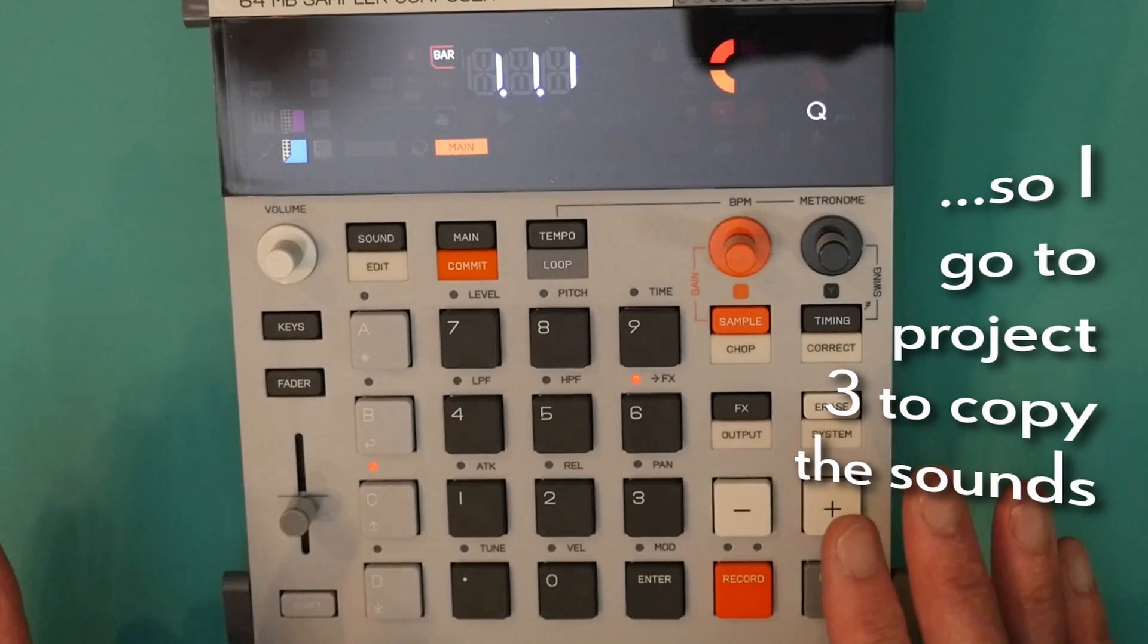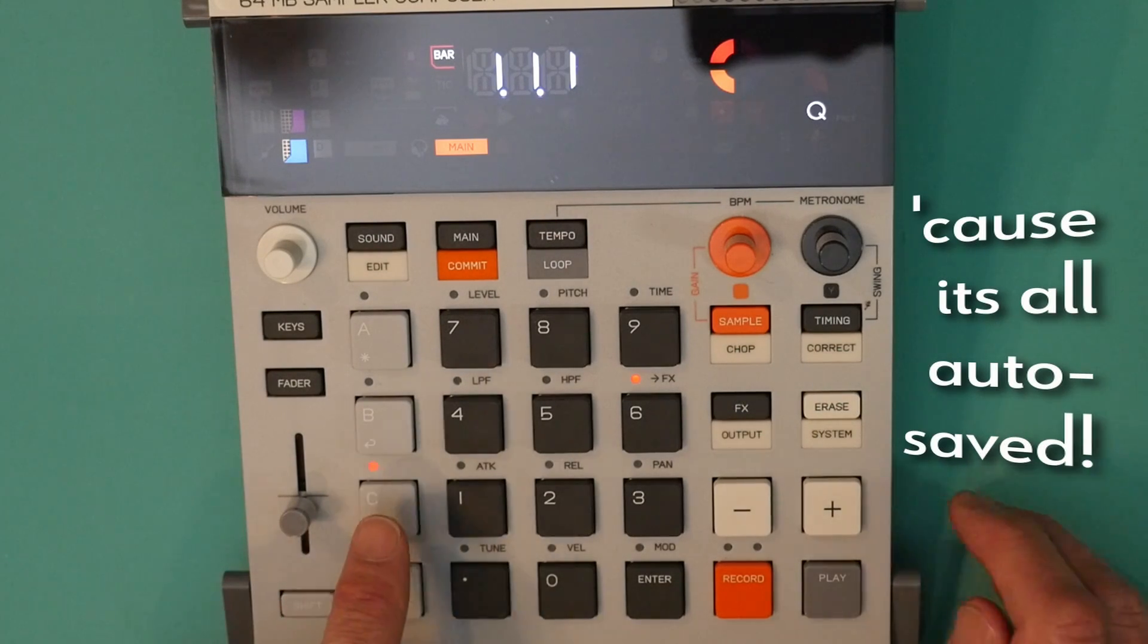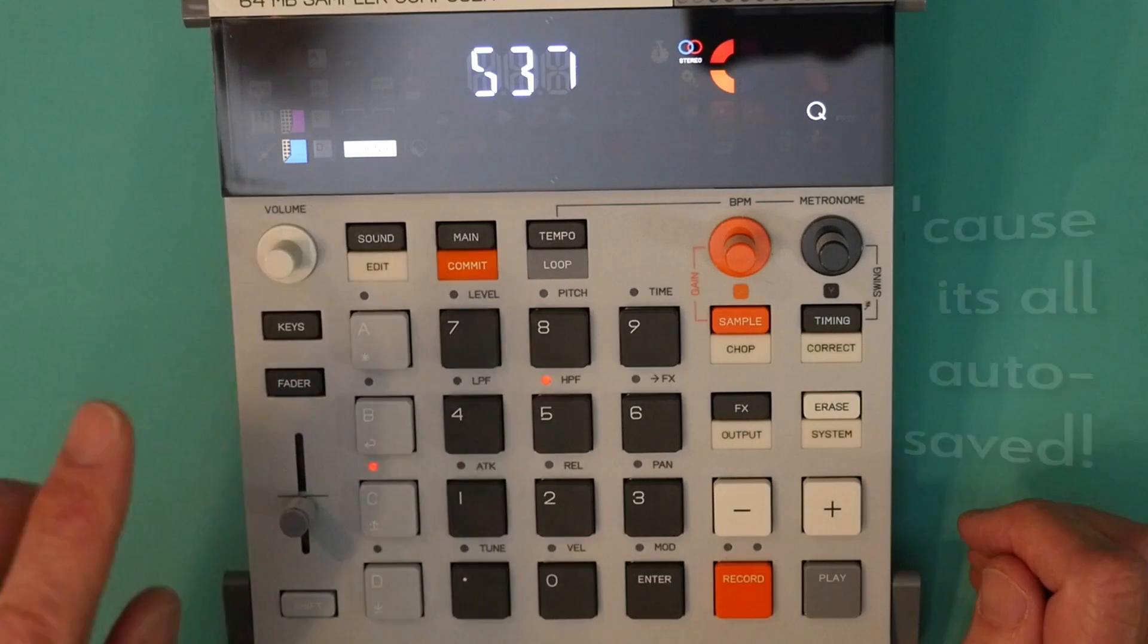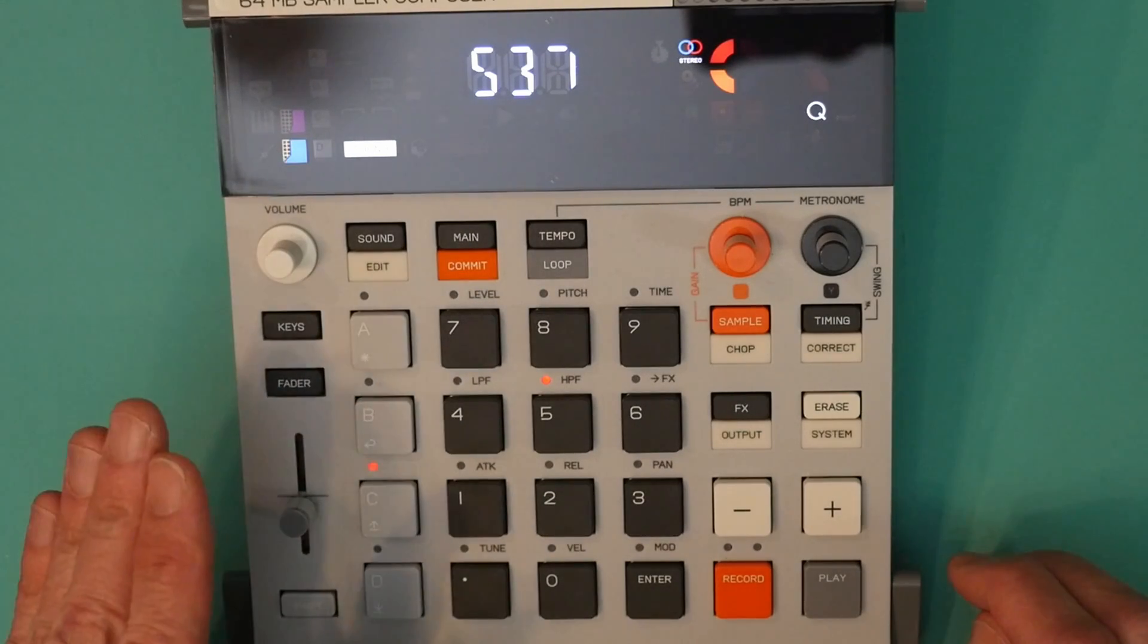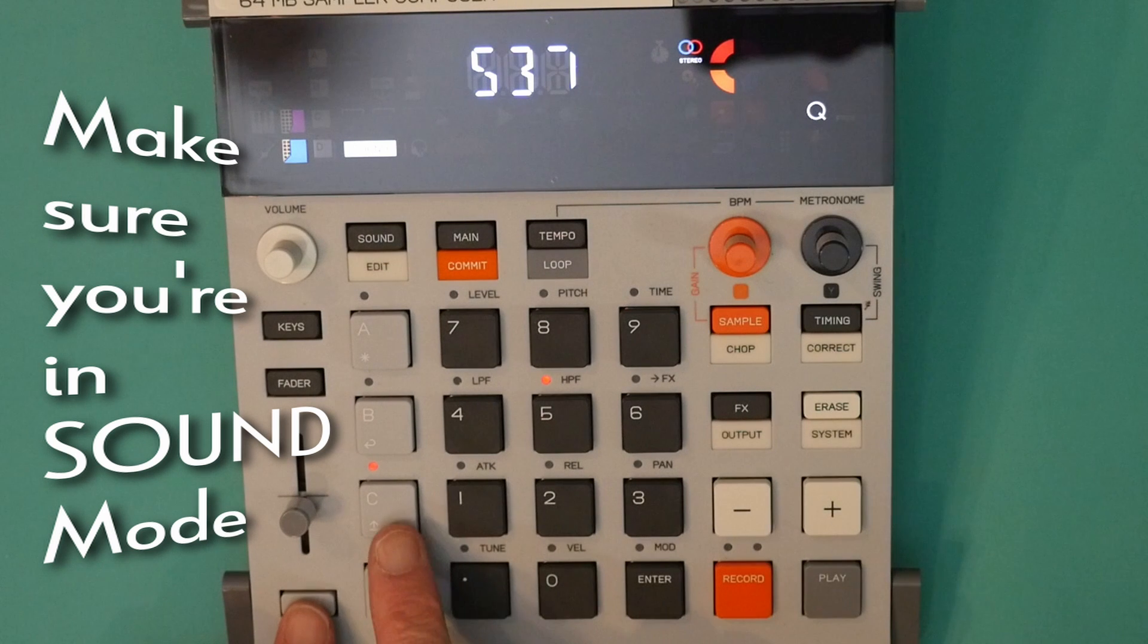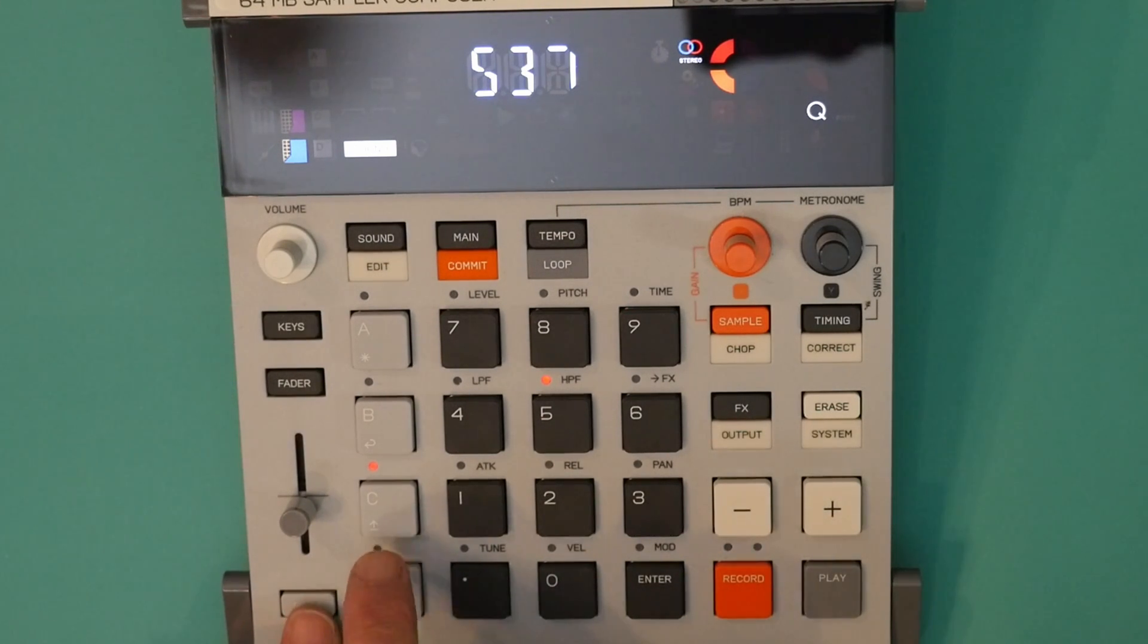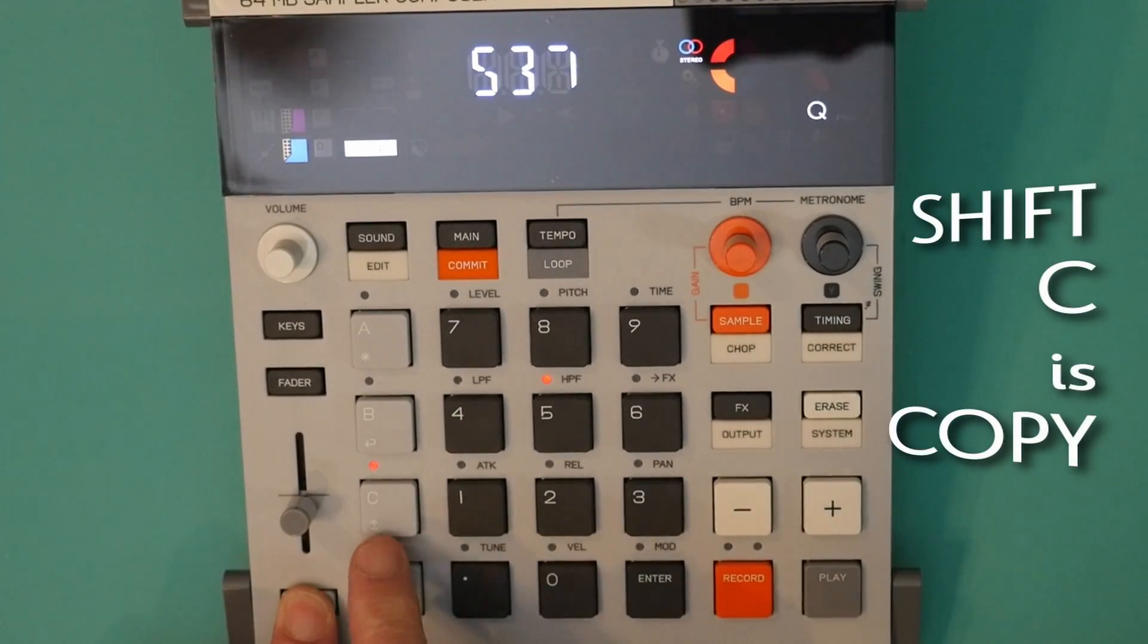First, we have to copy the group of sounds. We go to the group we want to copy, which in this case happens to be group C on project 3. We go into sound mode. You've got to make sure you're in sound mode for this to work. And now we're going to use the copy command, which is shift group C. There's a little copy icon on the C button. Now it's just a coincidence that we're copying group C and using the C button for the copy command. No matter what group I was copying from, I would use the C button for the copy command.